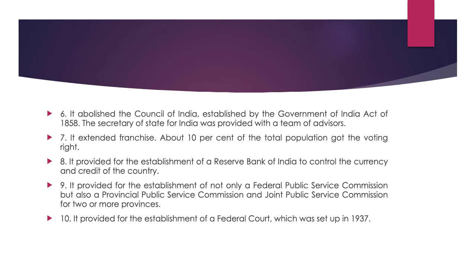The next feature is that it abolished the Council of India established by the Government of India Act of 1858. The Secretary of State for India was provided with a team of advisors. It extended the franchise — about 10% of the total population got the voting right. It provided for the establishment of the Reserve Bank of India to control the currency and credit of the country. It provided for the establishment of not only a Federal Public Service Commission, but also a Provincial Public Service Commission and Joint Public Service Commission for two or more provinces. It also provided for the establishment of a Federal Court, which was set up in 1937.